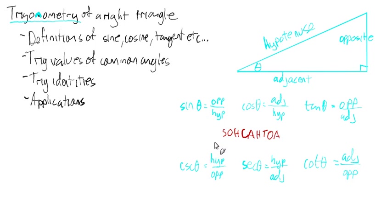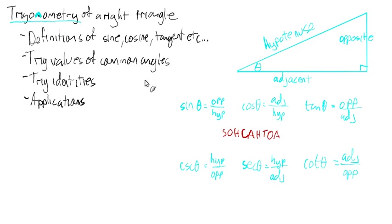So when you hear sine, cosine, and tangent, don't get too freaked out — it's just a ratio of one side of the triangle to another side. All six possibilities are here, and each of those six unique possibilities has a special name. That's all trigonometry really is, and then we figure out all the different things we can do with those trig values.